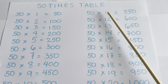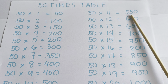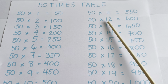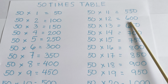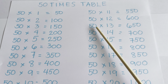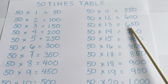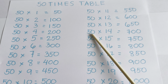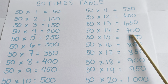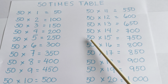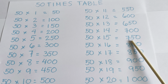50 times 11 is equal to 550. 50 times 12 is equal to 600. 50 times 13 is equal to 650. 50 times 14 is equal to 700. 50 times 15 is equal to 750.